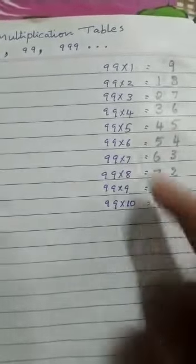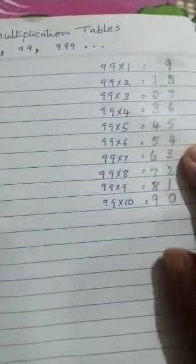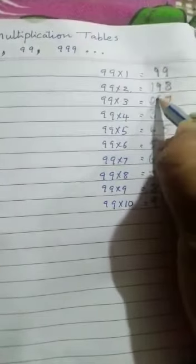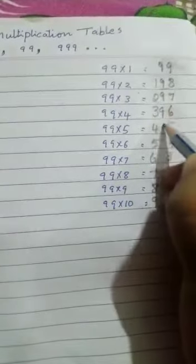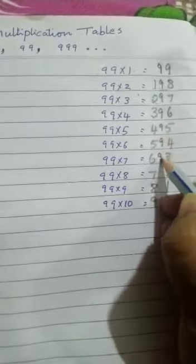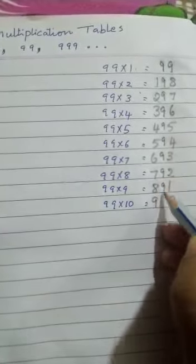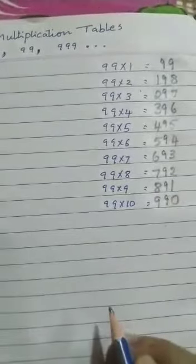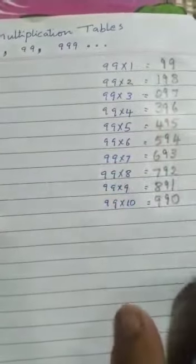This is the product of the table of 9. But now, you are going to write 9 between the numbers here. You have already left the gap. Here, you are going to fill the number 9 in each step. Yes, here is the table of 99 is ready.